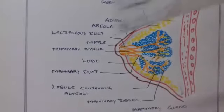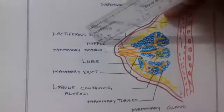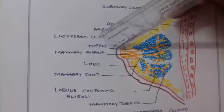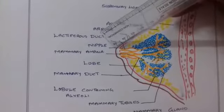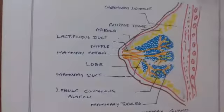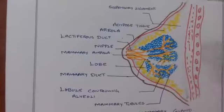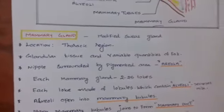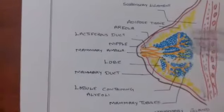In this mammary gland, this is nipple. This nipple is surrounded by one pigmented area called areola. And each mammary gland contains 2 to 25 lobes. Here some 3 lobes are given, but 22 to 25 lobes are there.